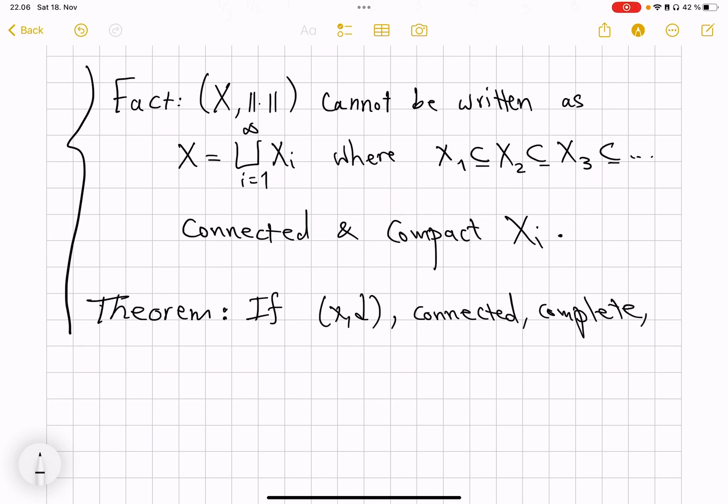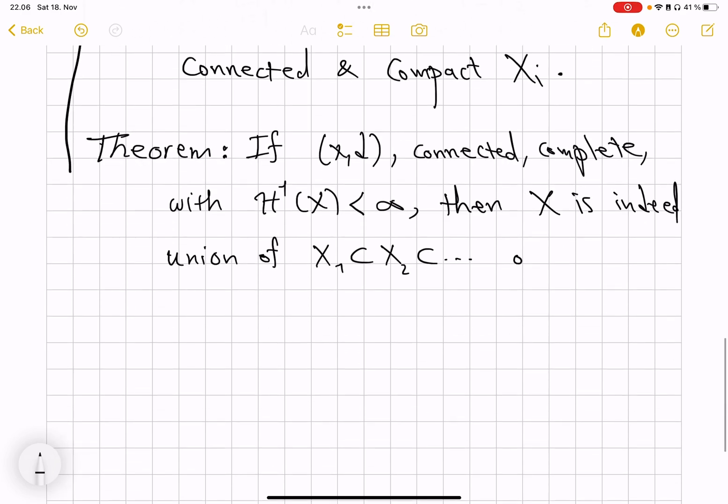If X, d is connected and complete with finite H^1, then X is indeed union of a chain, is a union of these X_i where each X_i is compact and connected.